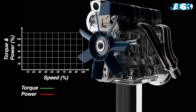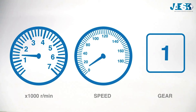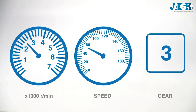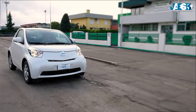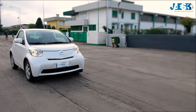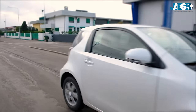An internal combustion engine produces torque, power, and optimum performance only within a limited speed range. For this reason, the transmission, which converts the engine's power to momentum that drives the wheels, must be equipped with several gear ratios that must be engaged one after the other as the speed of the car increases. In this way, it is possible to vary the speed of the vehicle while keeping the internal combustion engine within an ideal rotation speed.